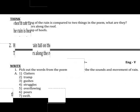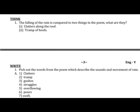The falling of the rain is compared to two things in the poem. What are they? It clatters along the roof, and there is the tramping of hoofs.